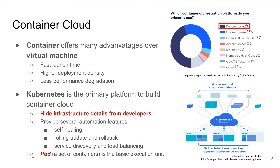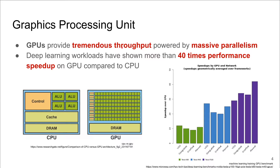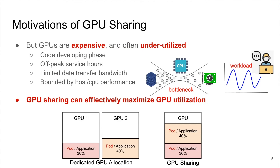The basic execution unit in Kubernetes is pod, and we will use it interchangeably with containers for the rest of the talk. GPU has been the driving force for high-throughput computing through massive parallelism. Applications like deep learning have shown more than 40 times performance speed-up on GPU compared to CPU. But GPUs are expensive and often underutilized during the code development phase, off-peak service hours, or because of data transfer and computing bottlenecks at the host side. To maximize GPU utilization, one of the most effective approaches is to provide GPU sharing, so that multiple underutilized GPU applications can be consolidated on fewer GPUs.